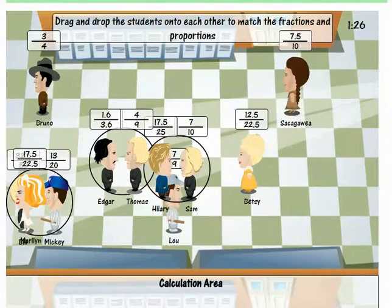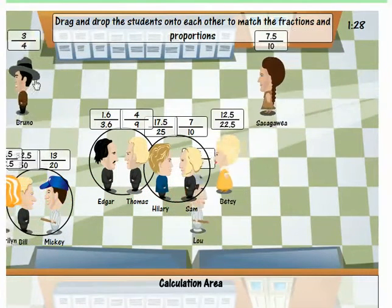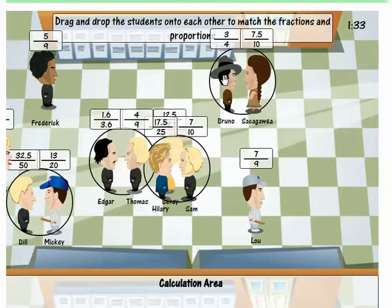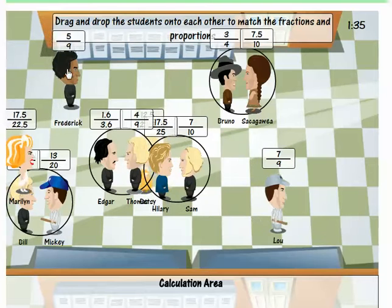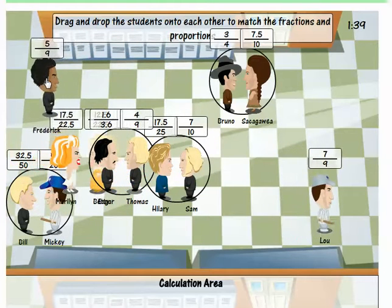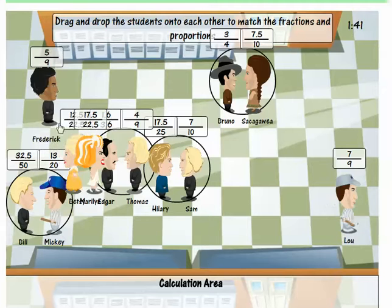Again I'm making complete estimations right here but I know this is correct. Sacagawea with Bruno Mars. Let's do Frederick Douglass with I believe that's Betsy Ross but she's not in a very good position. Let's bring her up here.